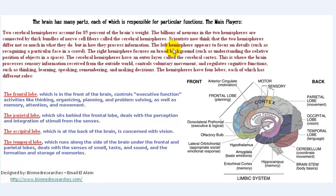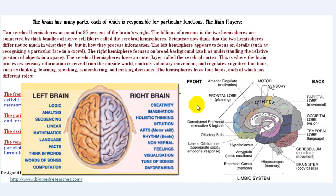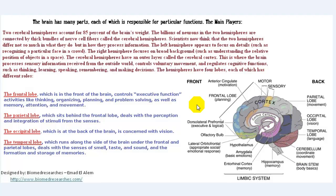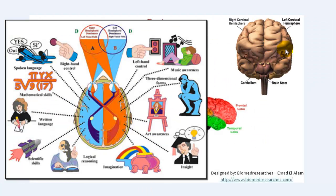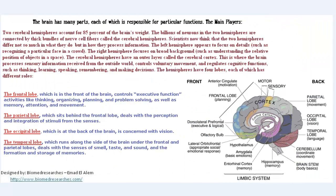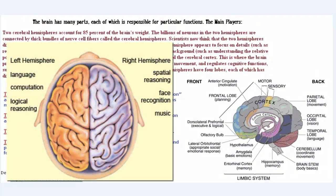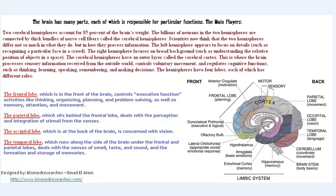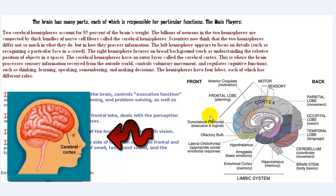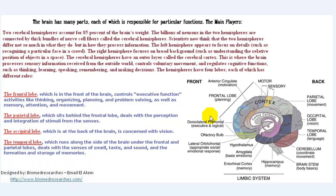Scientists now think that the two hemispheres differ not so much in what they do, but in how they process. The left hemisphere appears to focus on details, such as recognizing a particular face in a crowd. The right hemisphere focuses on broad backgrounds, such as understanding the relative position of objects in space. The cerebral hemispheres have an outer layer called the cerebral cortex, where the brain processes sensory information from the outside world, controls voluntary movement, and regulates cognitive functions such as thinking, learning, speaking, remembering, and making decisions.